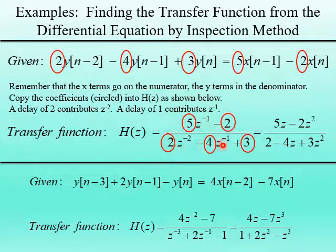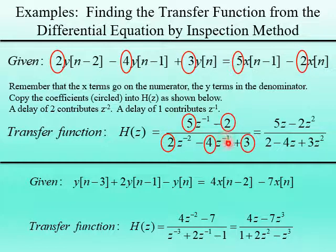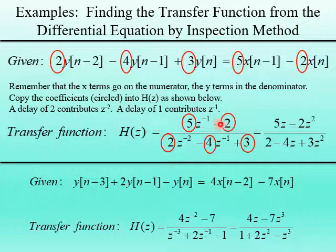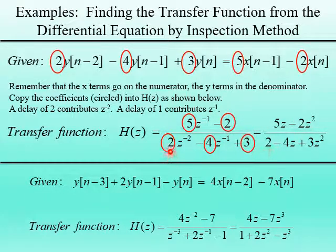This is a valid form of the transfer function H of z. If we don't like all these negative exponents, we look for the lowest power of z — here it's z to the minus 2 — and multiply every term on the top and bottom by z squared. The numerator becomes 5z minus 2z squared, and the denominator becomes 2 minus 4z plus 3z squared. This is a cleaner version of the transfer function.